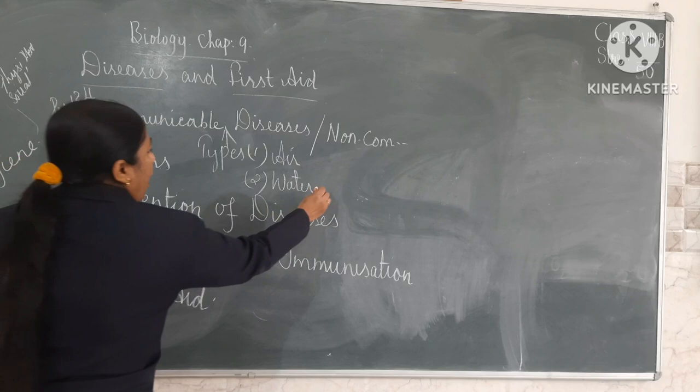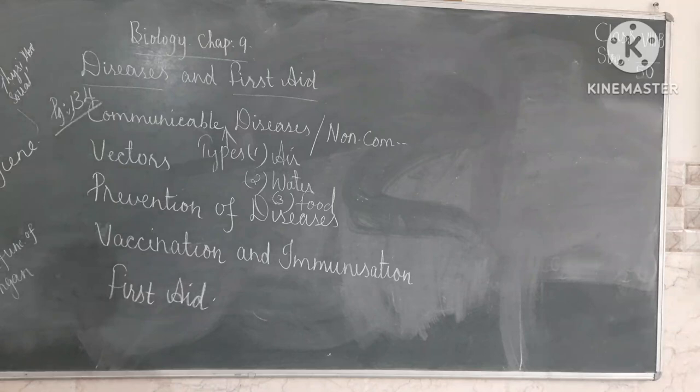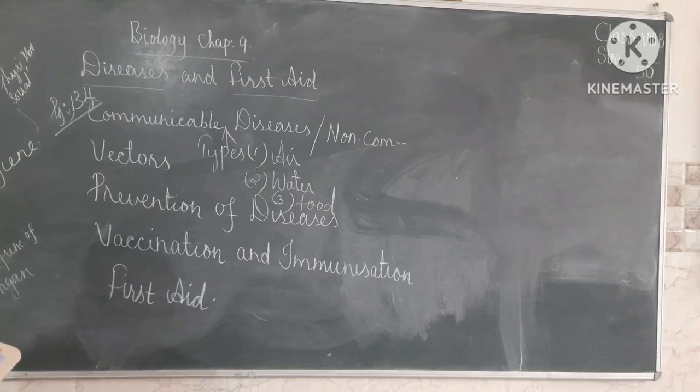Airborne diseases, waterborne diseases, and the third type is foodborne disease. Foodborne disease is caused by eating contaminated, unhealthy, or rotten food — consumption of unhygienic food, vegetables, or spoiled food. That will cause foodborne disease. Examples include common cold and conjunctive disease.